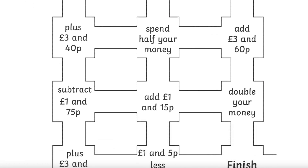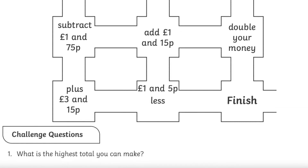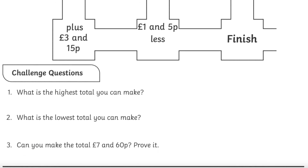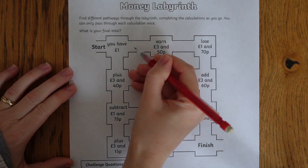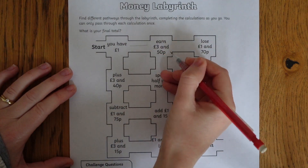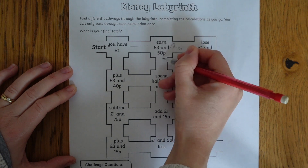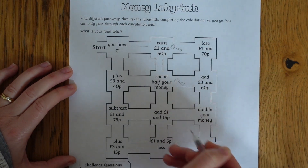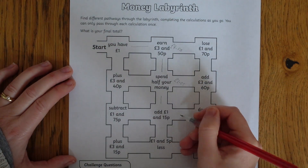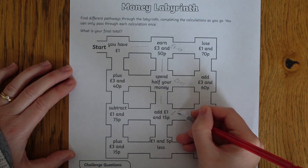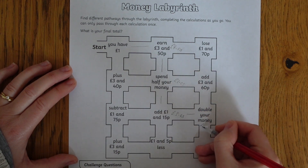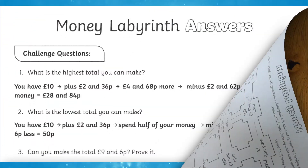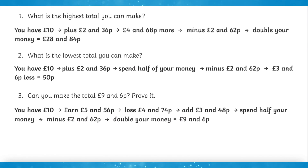This resource would be the perfect extension activity for any Key Stage 2 maths lessons about money. Children first move through the maze however they want, ensuring they only pass through each calculation once. The additional challenge questions will encourage children to take multiple routes through the maze as they seek the highest, lowest and a specific total. Answers are included so children can review their learning.